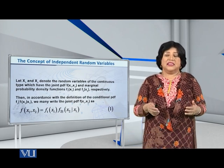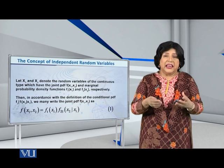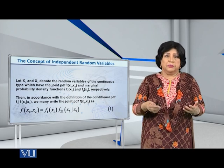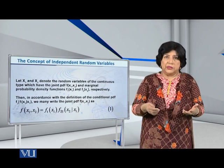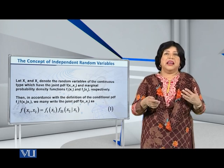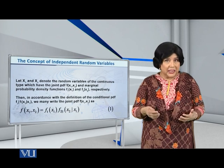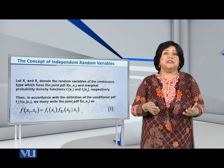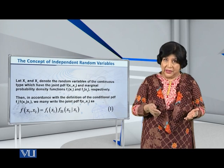we can write the joint PDF f(x1, x2) as follows: f(x1, x2) is equal to f1(x1) multiplied by f(x2 given x1).